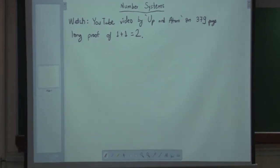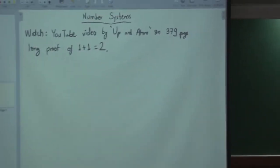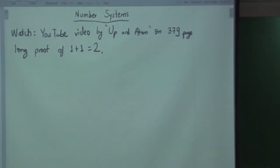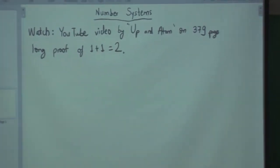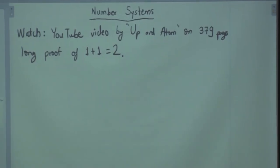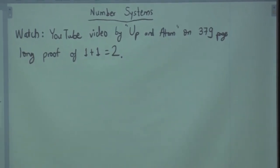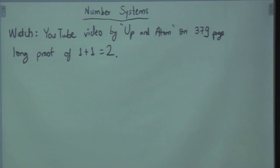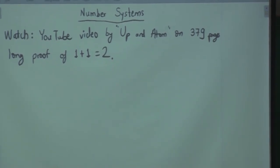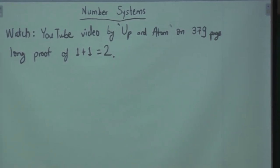Let us begin. We are studying number systems. Yesterday we saw what natural numbers are — the set of natural numbers whose existence is guaranteed by the axiom of infinity. This was also a question around 100 years ago when people wanted to formalize mathematics. While preparing for this class I came across this video.